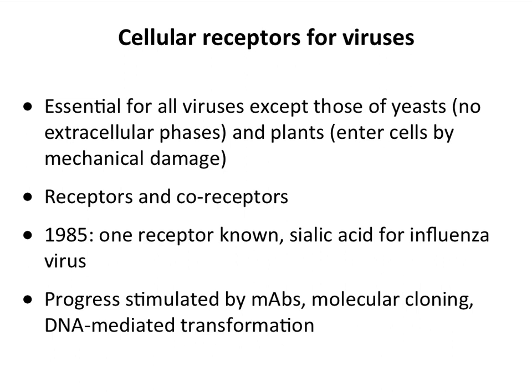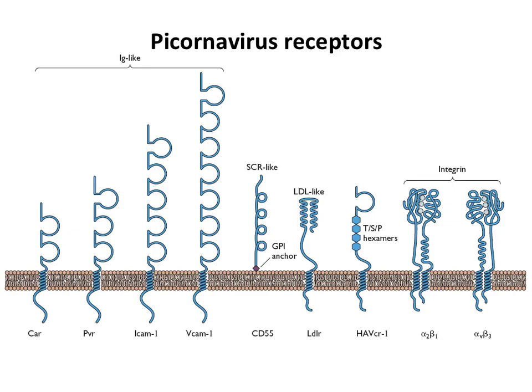Right after 1985, there was a lot of progress in the field. The availability of monoclonal antibodies, recombinant DNA technology, cloning, and DNA-mediated transformation all pushed the field forward. Now we know many, many virus receptors, and new ones seem to be identified every month.